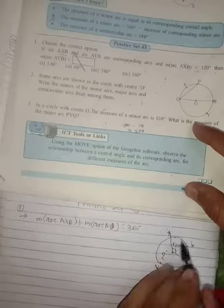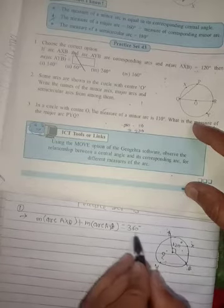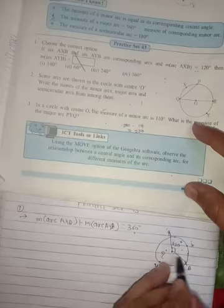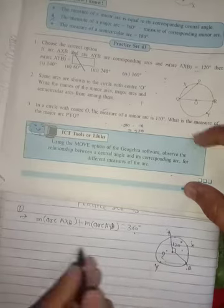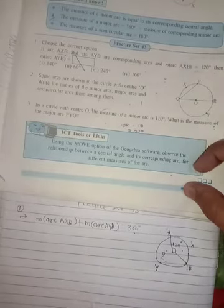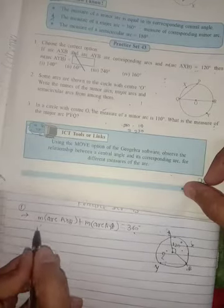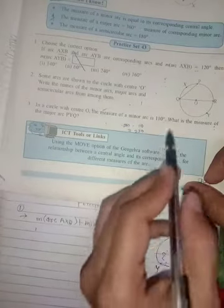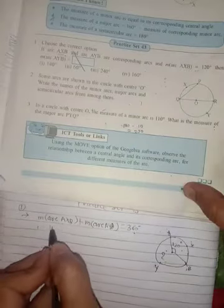We know AXB is given, so now let's find out AYB. Therefore, measurement arc AXB is 120 degrees.